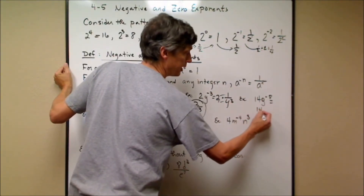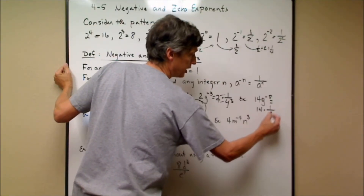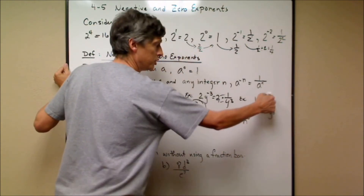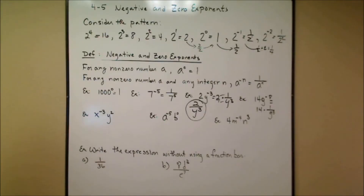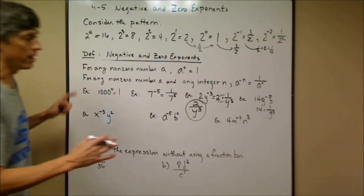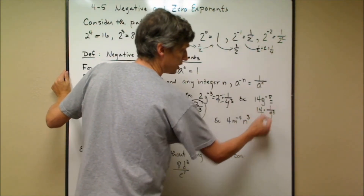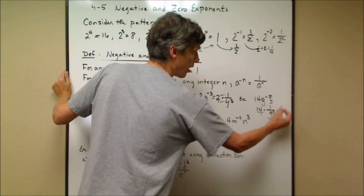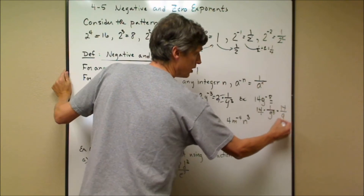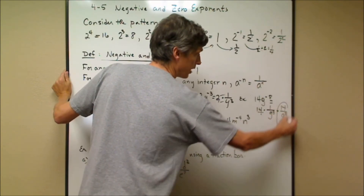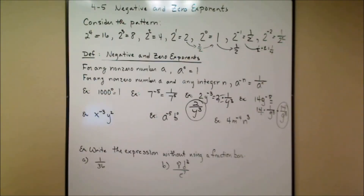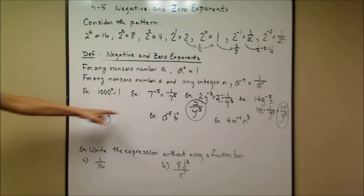The next example is similar: 14g^(−8). The g to the negative 8 means 1 over g to the 8, so this is 14 times 1 over g^8. The 14 is not raised to the negative 8 — if it were, you'd put parentheses around it. So the answer is 14 over g to the 8th power, with no negative exponent.